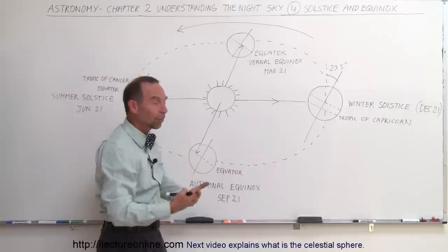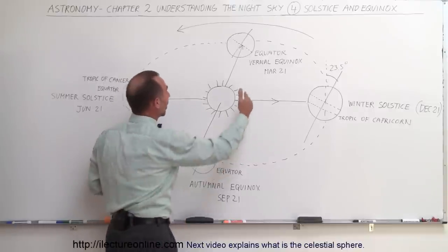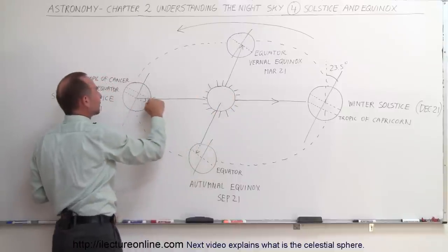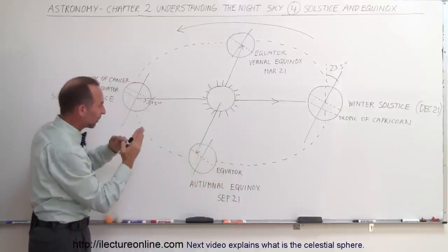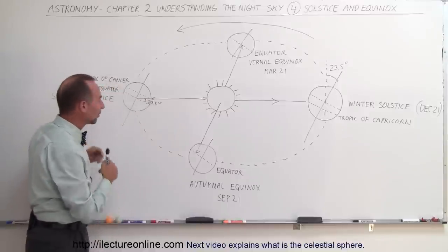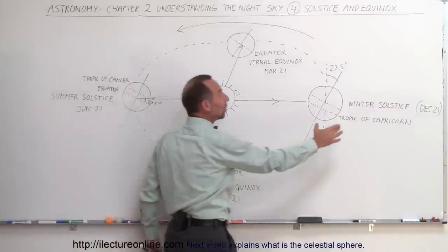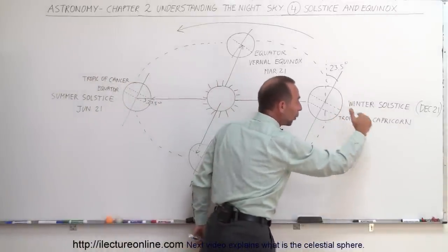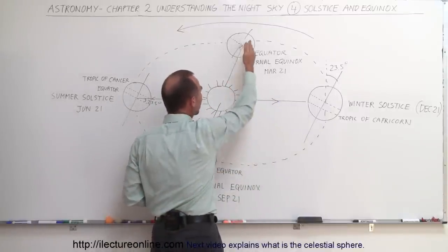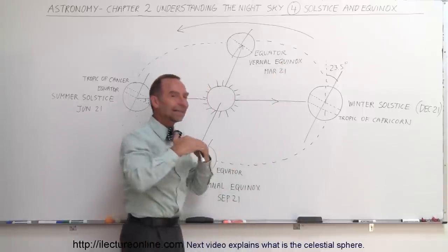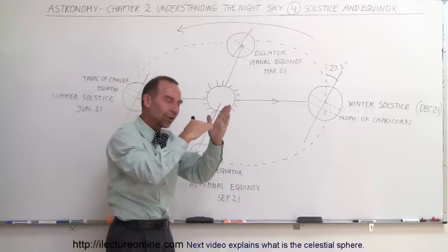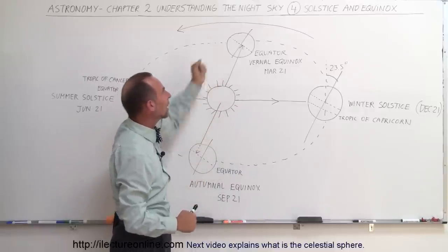When that happened, people realized that summer was about to come and the weather would turn much warmer. Three months later, the sun shines directly perpendicular to the earth's surface at the Tropic of Cancer — that's the first day of summer, June 21st. These events were called the winter solstice, which is the lowest point the sun reaches at that time of year. The vernal equinox occurs when the sun shines equally in both the northern and southern hemispheres because it shines directly across the equator — that's where the word equinox, meaning equal, comes from.